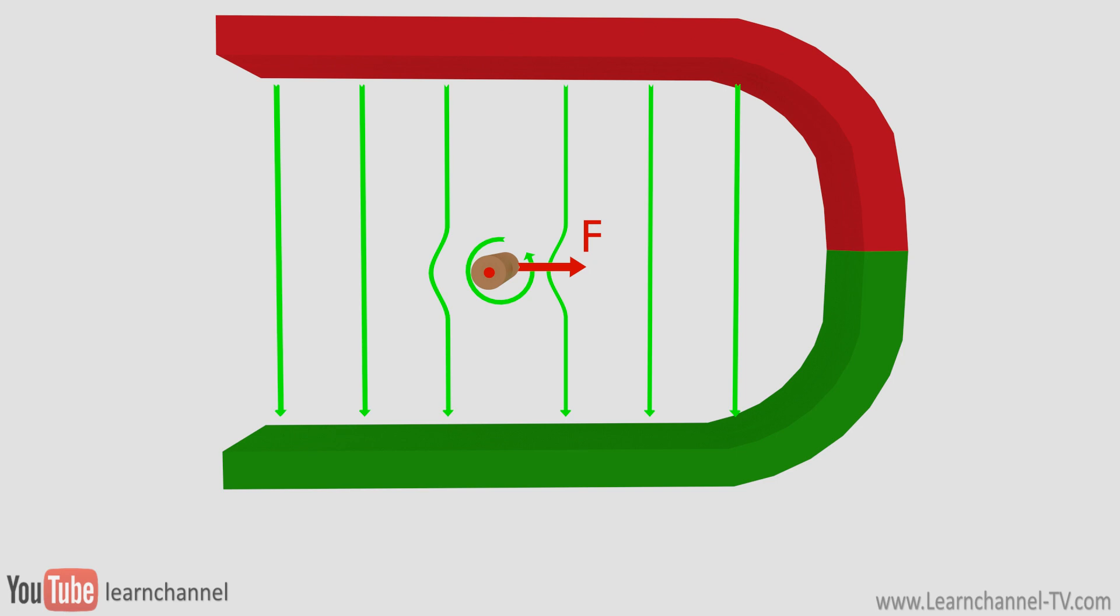A current carrying wire generates a concentric magnetic field, which interacts with the field of the permanent magnet. Magnetic field lines with opposite directions attract each other. Those with same directions push off each other. That's why a force is applied to this wire.